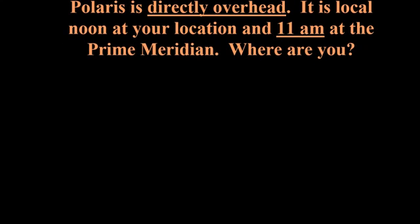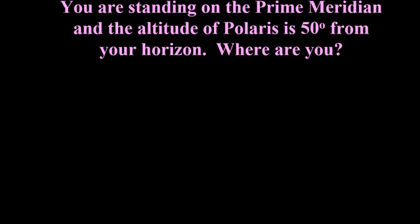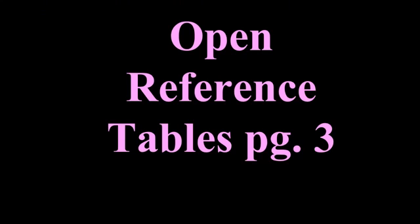Here's one more problem for you to work out on your own. Take some time to figure it out, and if you need to go back and review the previous steps in the video, you may do so. The problem: you are standing on the prime meridian and the altitude of Polaris is 50 degrees from your horizon. Where are you? In your notes, write down the two coordinates for your location.